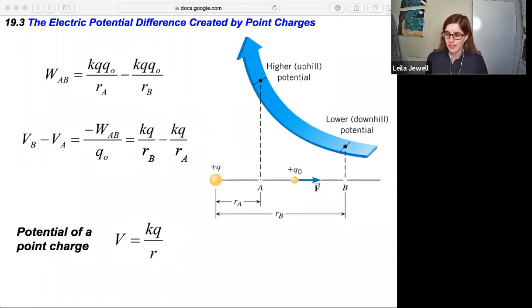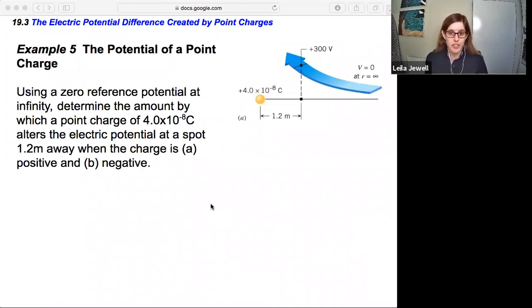Let's check out an example of this. Example five, the potential of a point charge. Using a zero reference potential at infinity, determine the amount by which a point charge of 4 times 10 to the minus 8 Coulombs alters the electric potential at a spot 1.2 meters away when the charge is A positive and B negative. So we're going to work with this zero reference potential of infinity. That's what allows us to say the potential is just KQ over R. So that simplifies things rather than having to deal with a potential difference. We're calculating the potential at this point relative to infinitely far away where it's zero. So we can just calculate with our equation that V is equal to KQ over R.